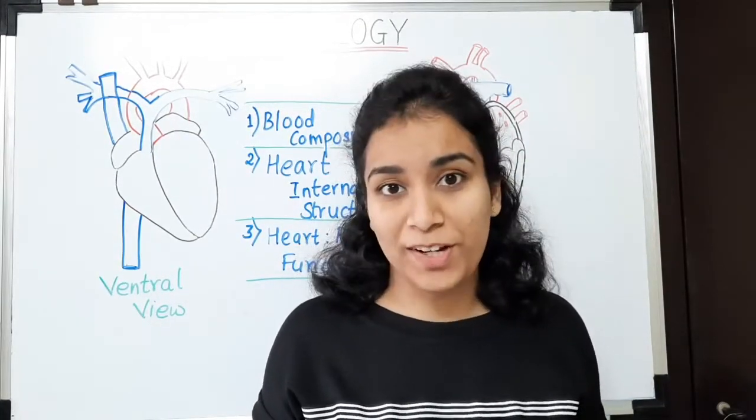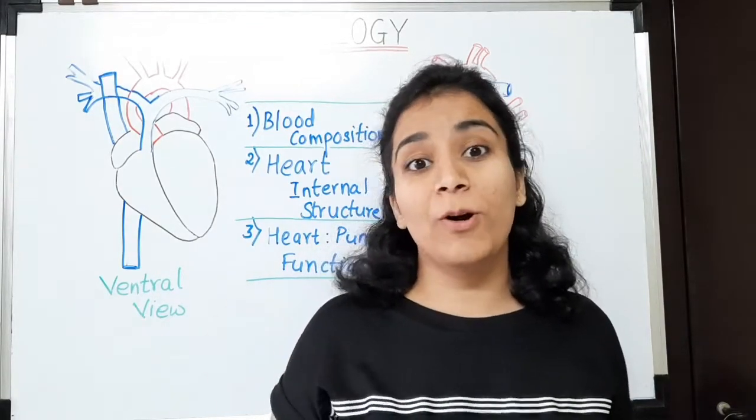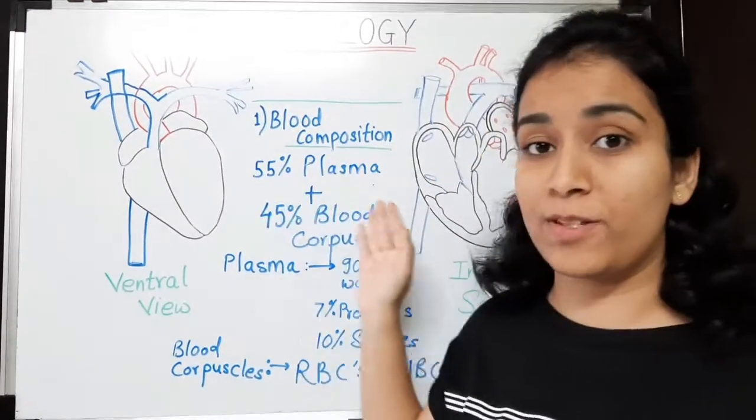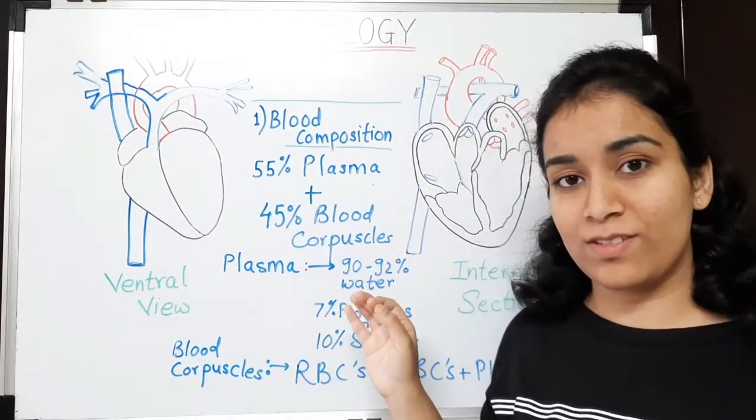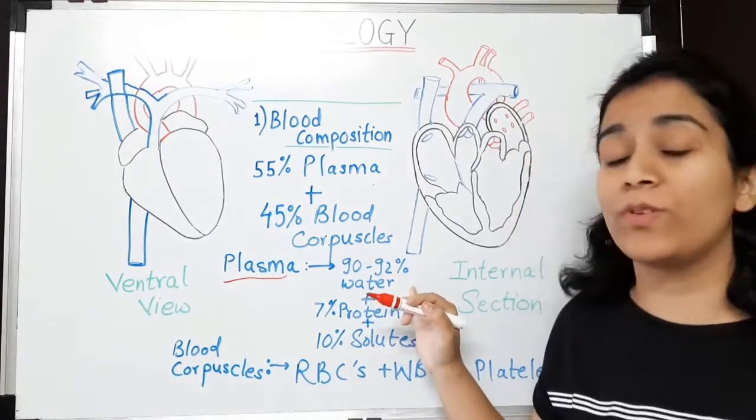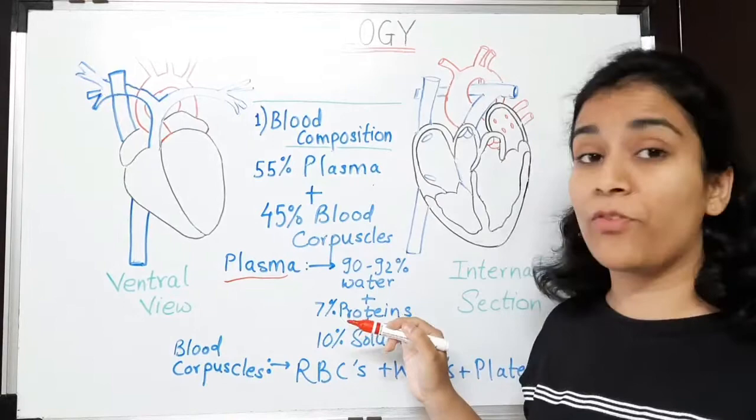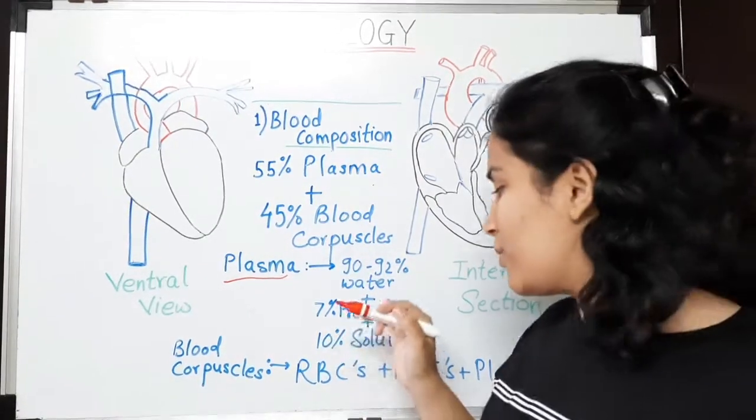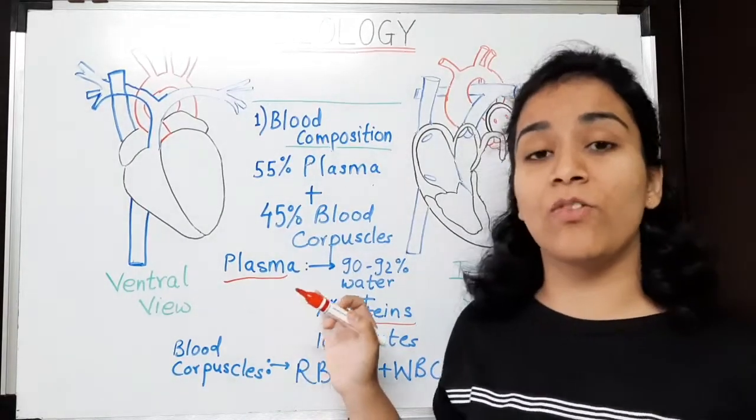Heart pumps out blood. Blood is also kind of fluid, right? So now let's take a quick overview about blood composition. Blood is composed of 55% plasma and 45% blood corpuscles. So this plasma includes 90 to 92% of water, 7% of proteins and 10% of solutes. So now these proteins, which you can see over here, 7% of proteins.